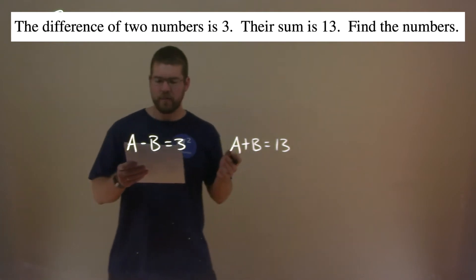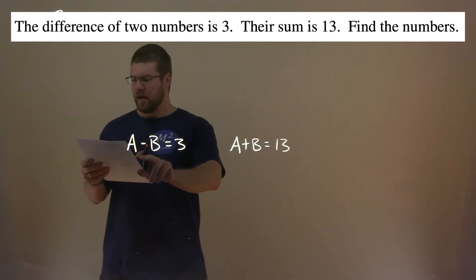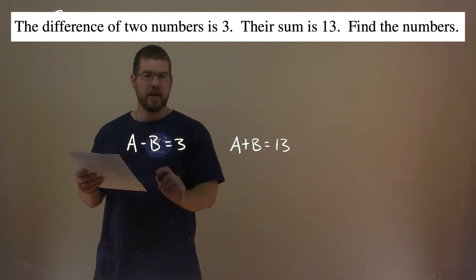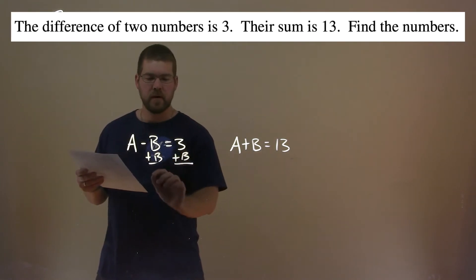So where do we go from there? We're going to take A minus B and try to get A by itself. Add a B to both sides, and A equals 3 plus B.